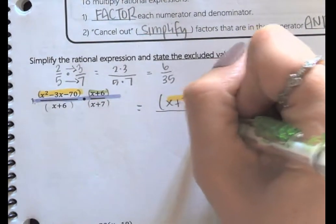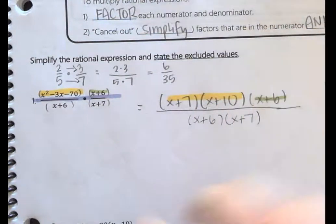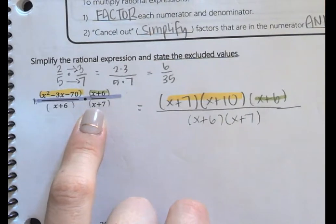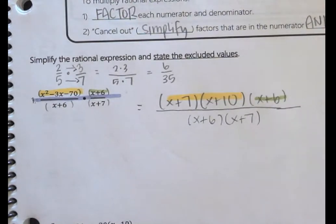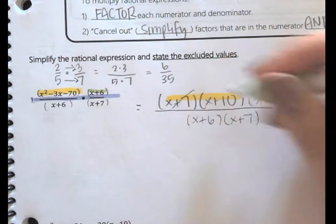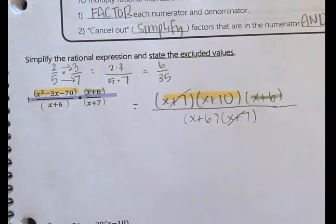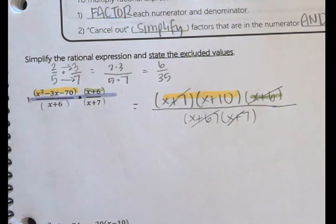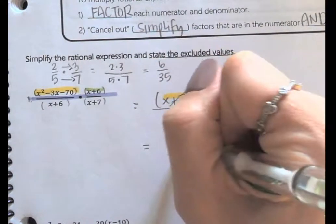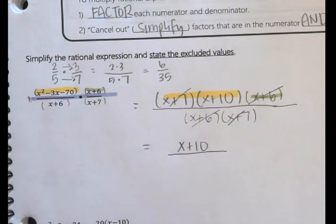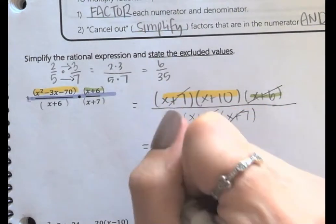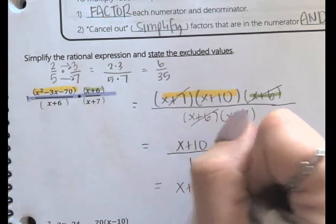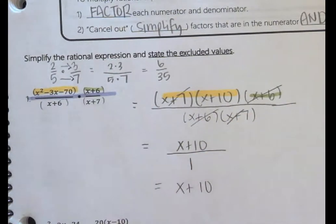In the bottom, we just have x plus 6 and x plus 7 — we're multiplying those two together. We're not actually going to double distribute them; we're just going to write them as a multiplication. Now we can do our simplifying. We have x plus 7 in the top and the bottom, and x plus 6 in the top and the bottom. So what we have left in the top is x plus 10, and what we have left in the bottom is 1. This simplifies down to just x plus 10 — you don't have to leave that 1 in the bottom.